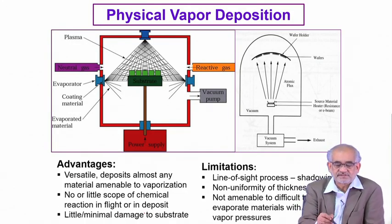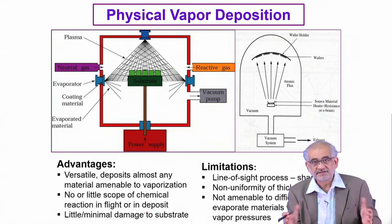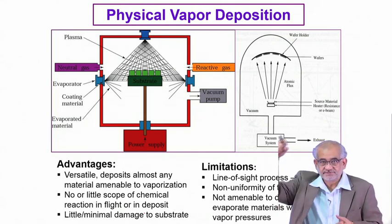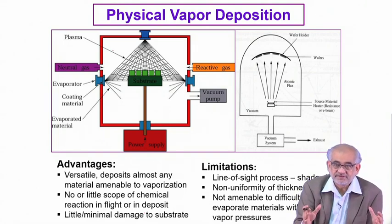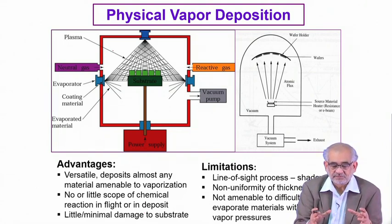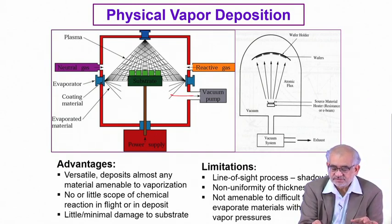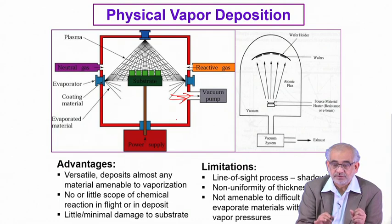Typically the chamber looks like a bell jar with a flat bottom, so that you can lift the bell and bring it back. Otherwise it can simply be a fixed chamber. You have an evacuation process so you can make the inside of the chamber extremely low pressure.